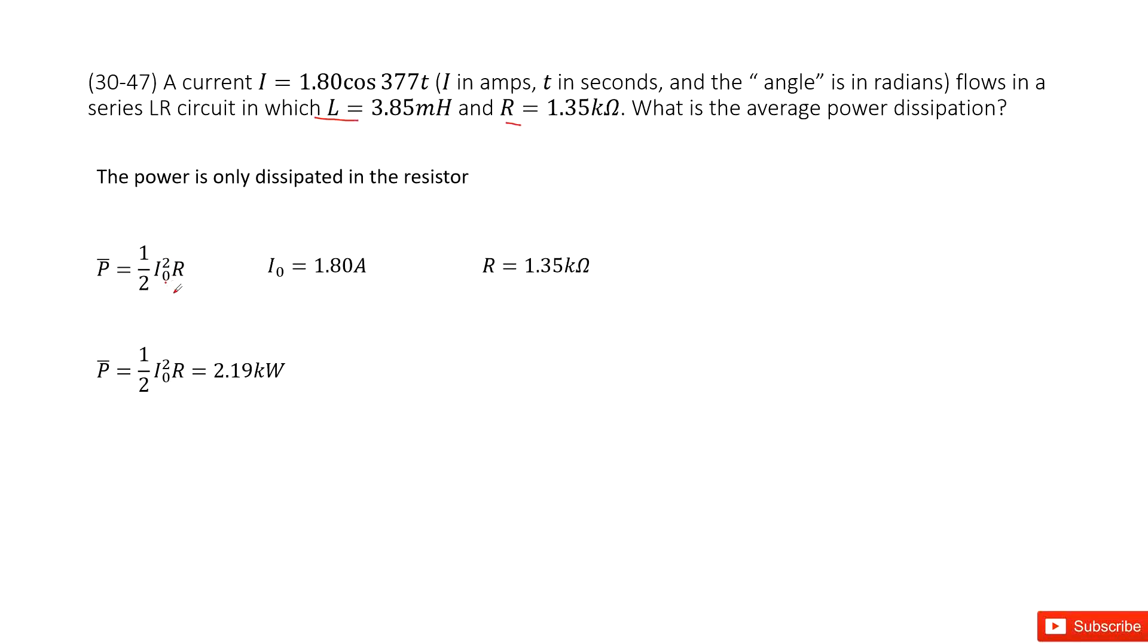This I naught is the amplitude for this current. We can see it is a cosine function. So the I naught is the amplitude for the I, 1.80 amperes.